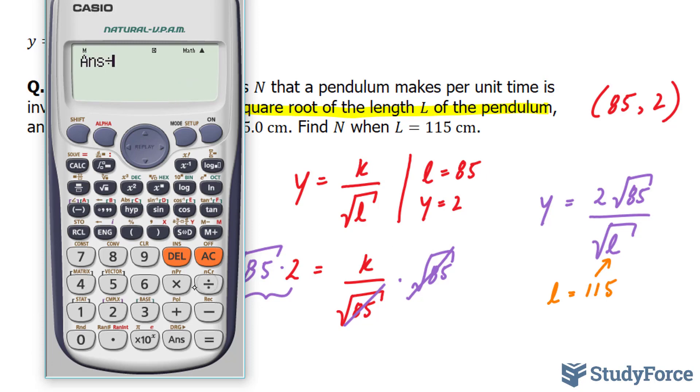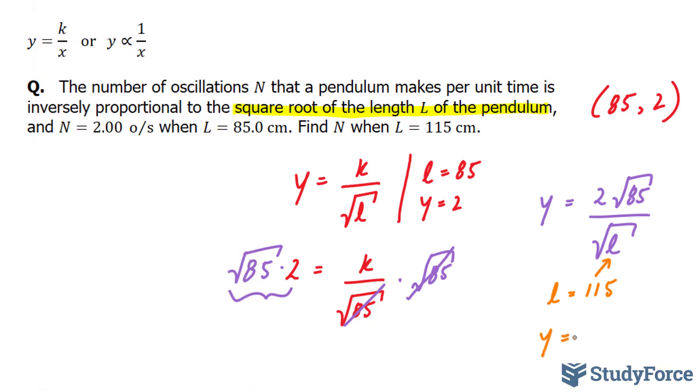This number divided by the square root of 115 gives us 1.72. y is equal to 1.72 oscillations per second.